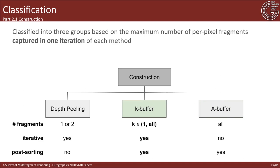K-buffer approaches offer a middle ground between depth peeling and A-buffer approaches. In general, k-buffer methods capture the k-best fragments in each iteration — usually the k-nearest fragments with respect to the viewer. Compared to depth peeling, using a k-buffer requires fewer iterations since a larger subset of fragments is captured per iteration. However, fragments must be sorted manually.